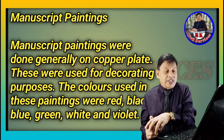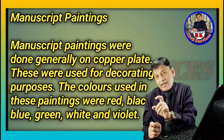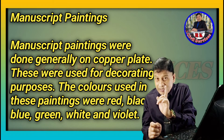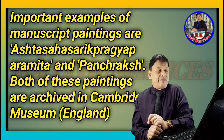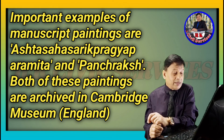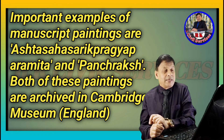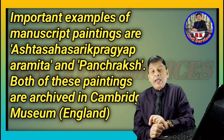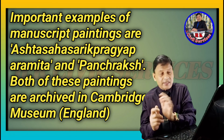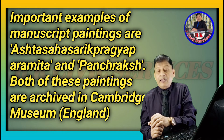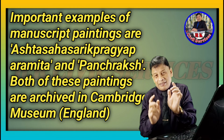The colors used in manuscript paintings were red, black, blue, white, and violet. Important examples of manuscript paintings are Ashtasahasrika Prajnaparamita and Panchraksha. Both of these paintings are archived in Cambridge Museum, England — a very important point.